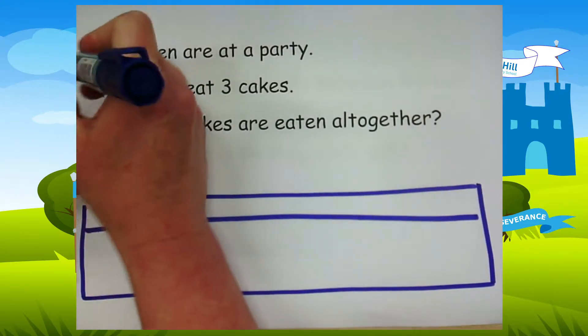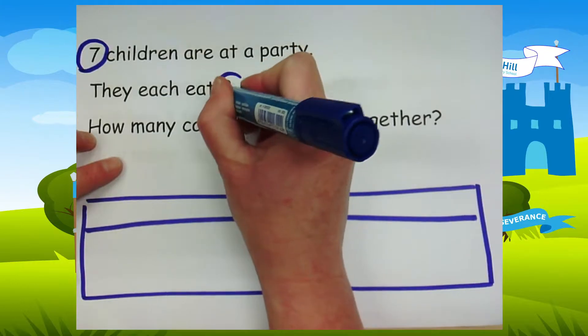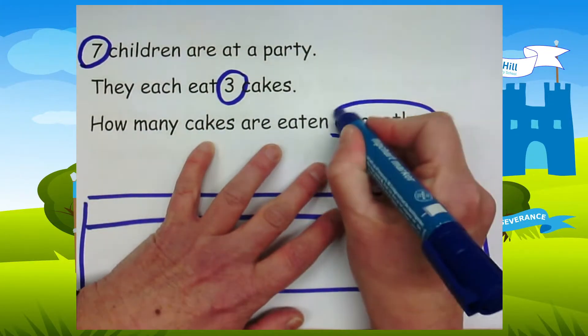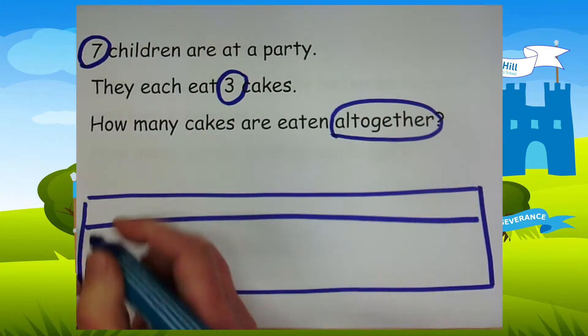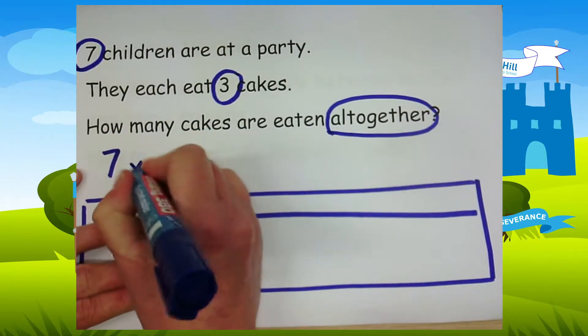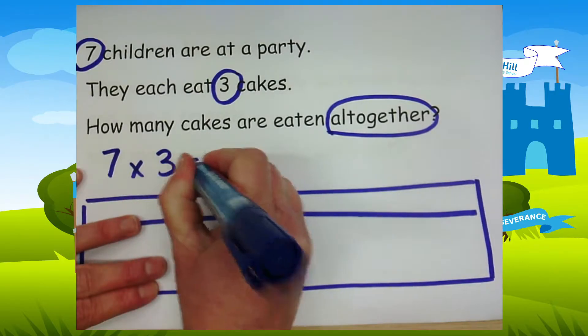You need to pick out the important information. We know there's seven children, we know they eat three cakes each, and we've got to find out how many cakes are eaten all together. So my number sentence will be seven lots of three, because I'm finding out how many they were eaten all together.